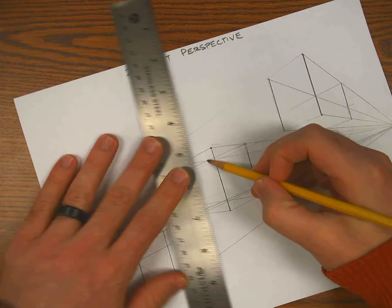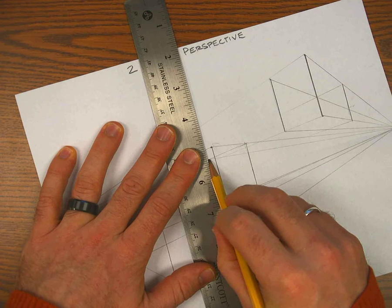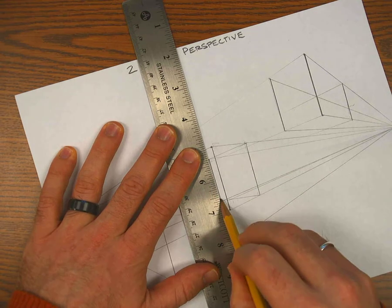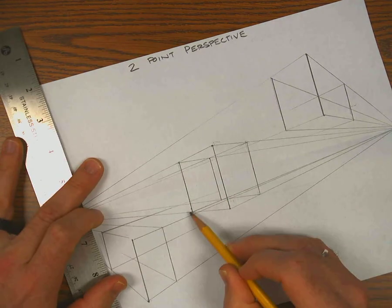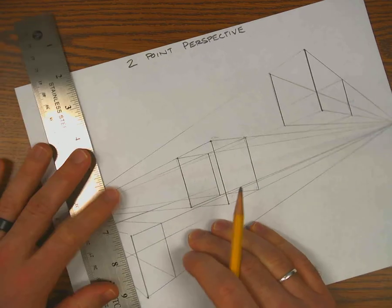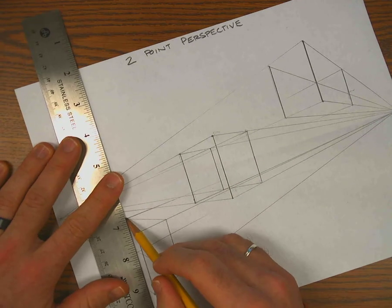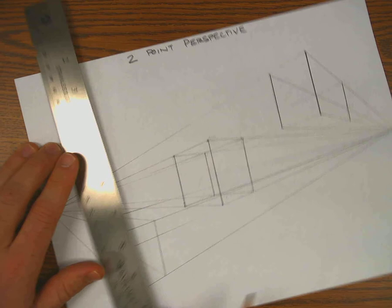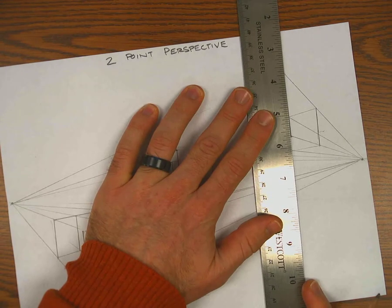If I go straight down, it'll connect with where this line crosses that line, and the same thing over here, and the same thing up top.